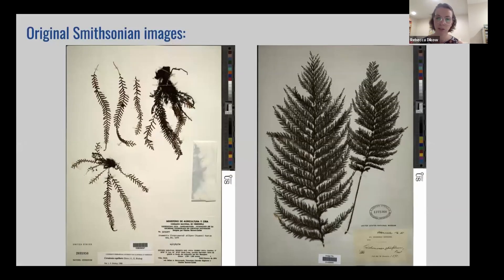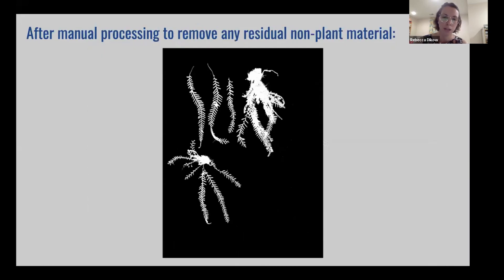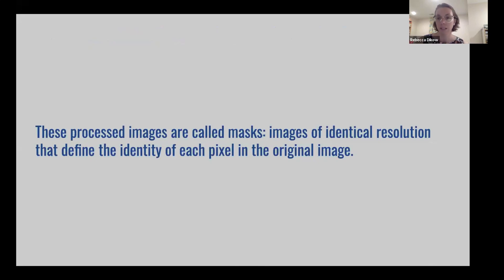Here's an example: the original images, the result after running the initial segmentation code, and then the result after manual processing. We produce these processed images called masks — images of identical resolution that define the identity of each pixel. This is used very commonly in medical imaging to define certain kinds of cells. You could also have not just two classes — plant and not plant — but multiple classes.